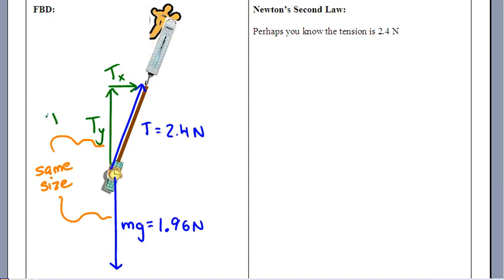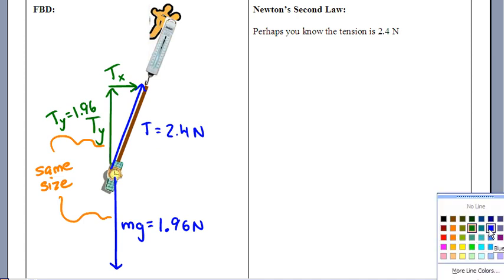So that gives me some insight into how big that Ty is, which is really important because it'll help me find Tx. Tx, and I really need that Tx. So Newton's second law. Let's see if we can get F net equals MA to roll.